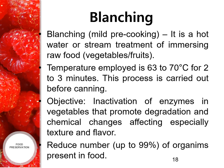The next example in heat treatment is blanching, which means mild pre-cooking. It is a hot water or steam treatment of immersing raw food like vegetables and fruits. The temperature employed is 63 to 70 degrees Celsius for 2 to 3 minutes. This process is carried out before canning. The objective of blanching is inactivation of enzymes in vegetables that promote degradation and chemical changes affecting texture and flavor. It also reduces the number of organisms present in food by up to 99%.